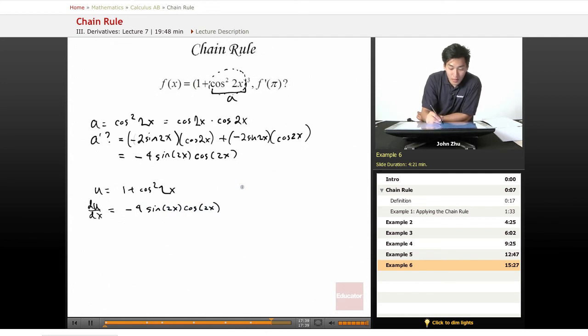And f of x becomes, f of u is u cubed, which equals 3u squared. So f of x is 3 times u, which in our case is 1 plus cosine squared 2x squared.